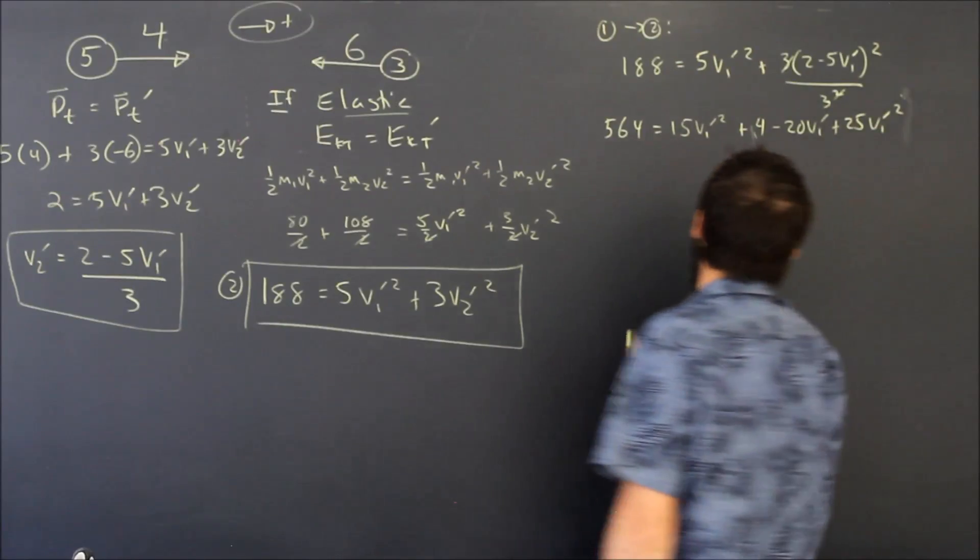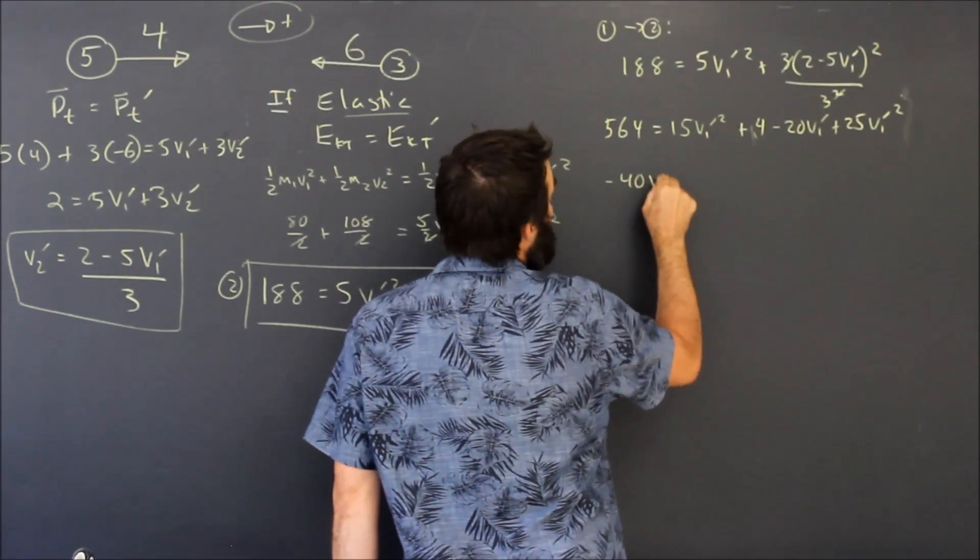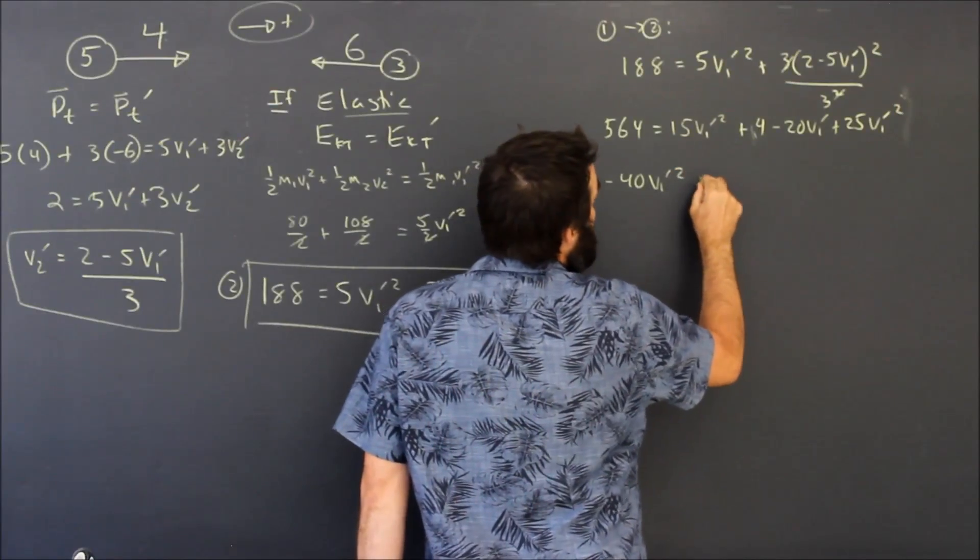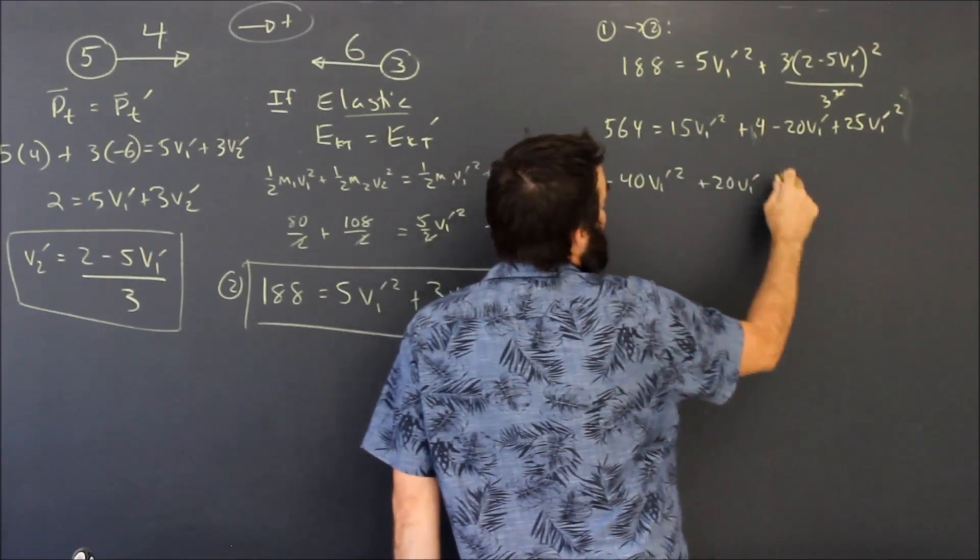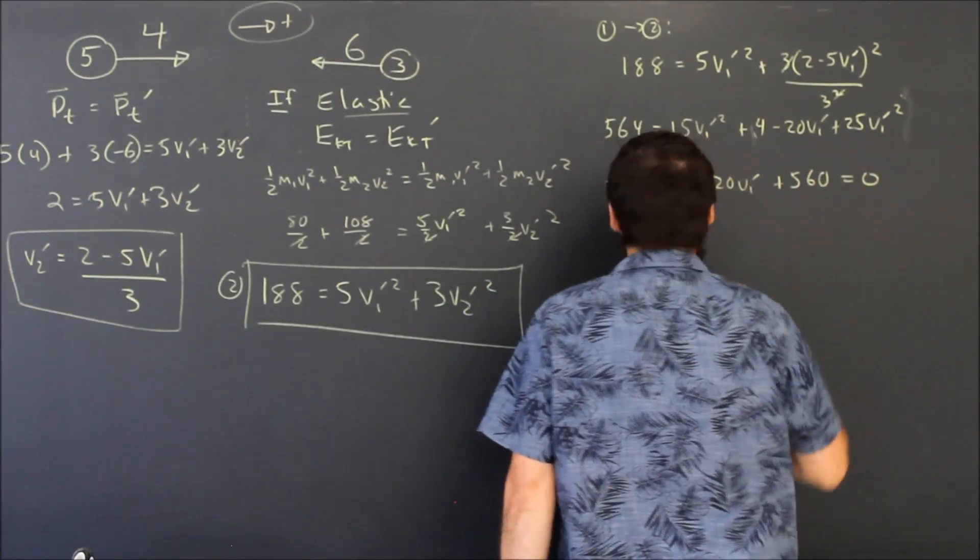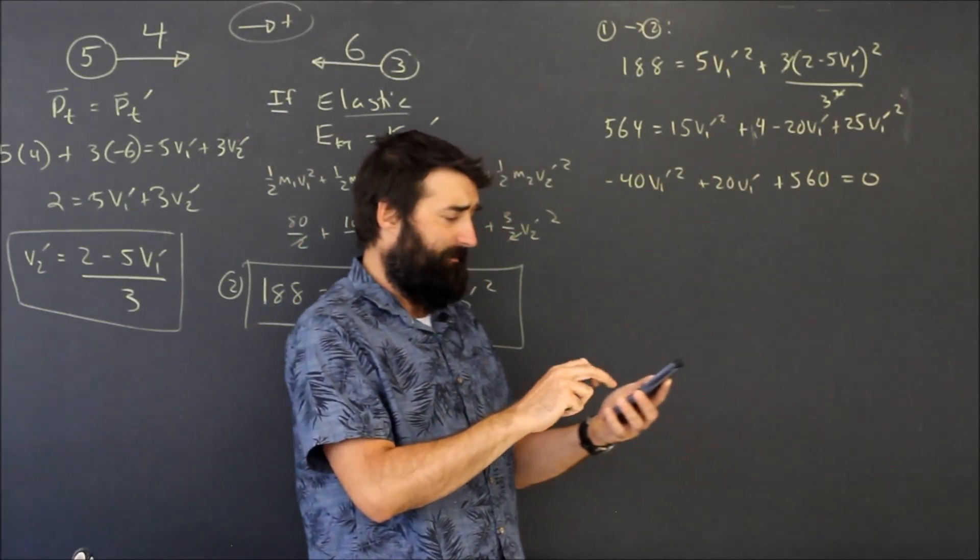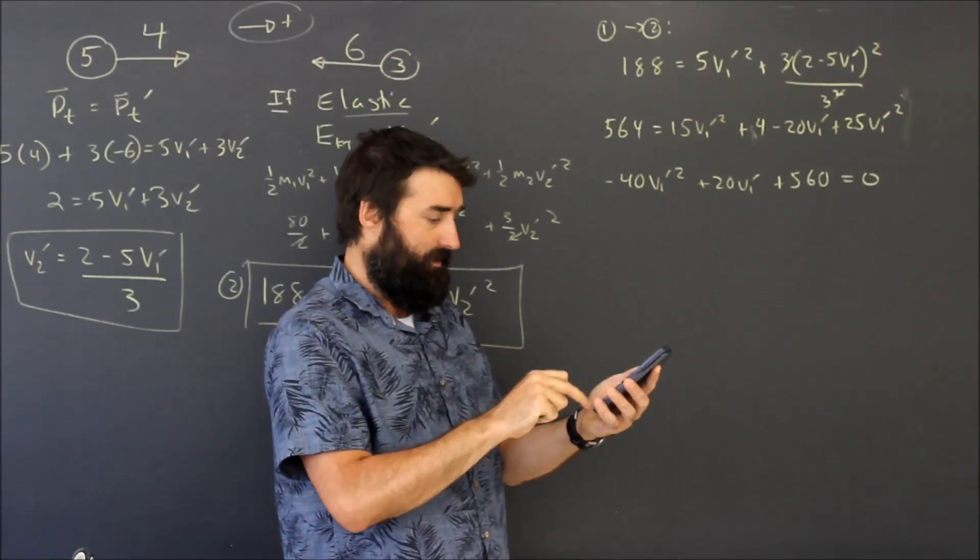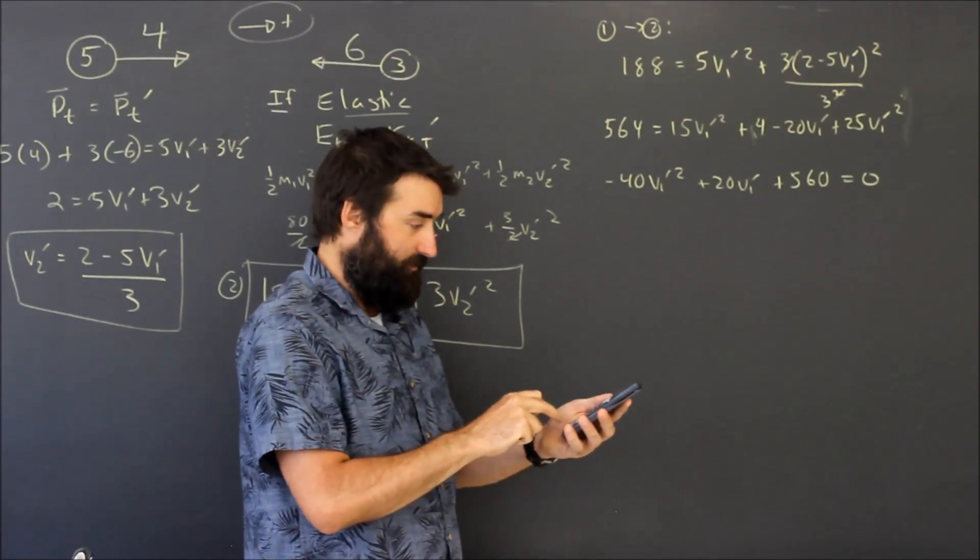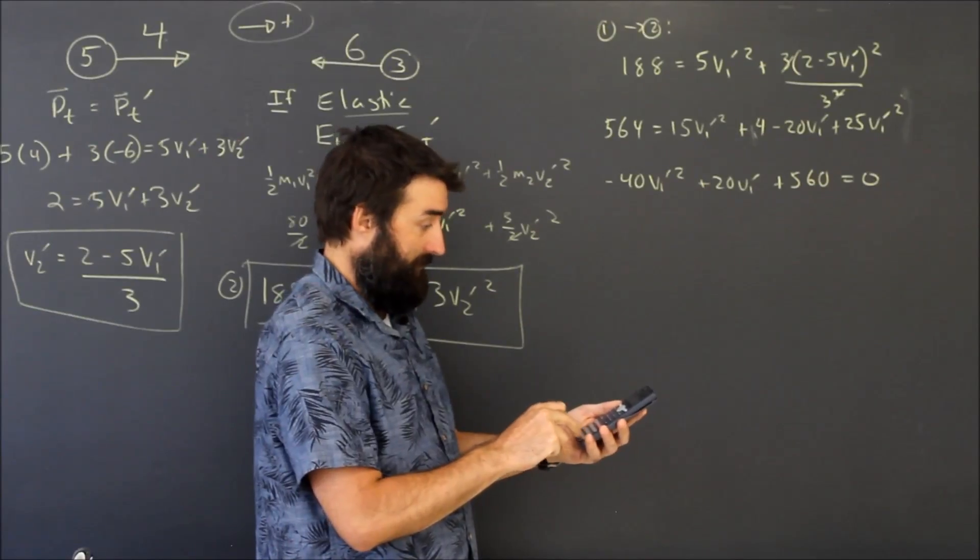So now I'm going to shove everything over to the left side of the equation. Simplify. I'm going to get negative forty v one prime squared plus twenty v one prime. Five sixty minus four is five hundred and sixty and that equals zero. And that's a quadratic formula, sure, but who cares? I grab my calculator. I put in A as negative forty. I hit B as twenty. I hit C as five sixty. I hit equals. And I get V one prime is either negative three point five meters per second or positive four point oh.